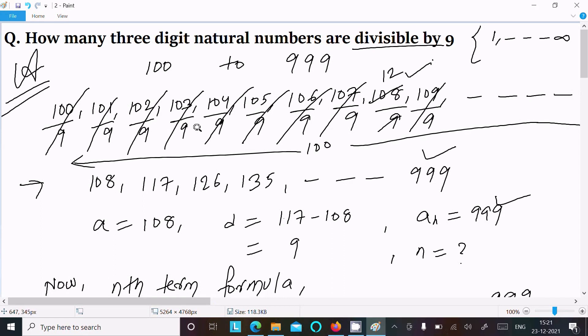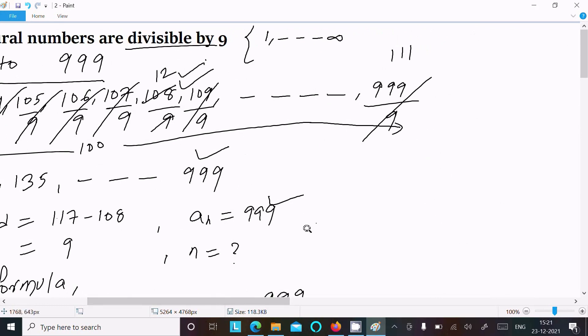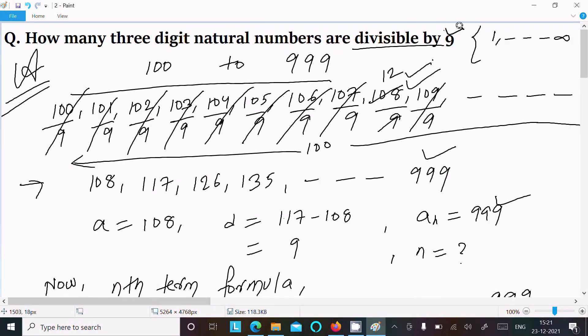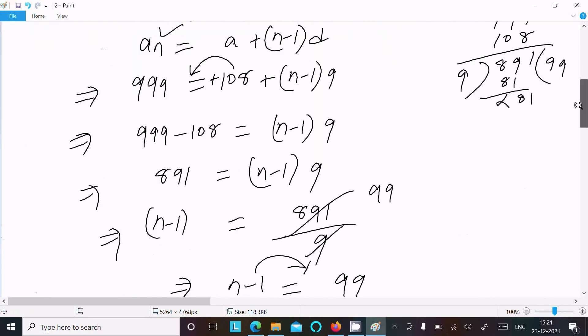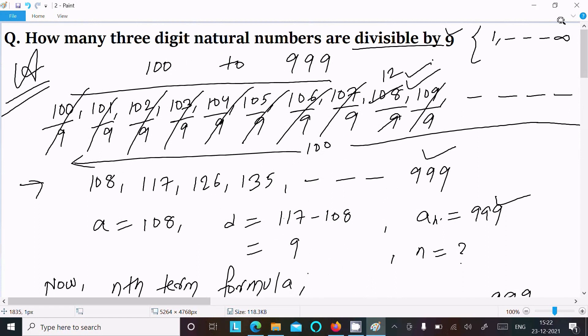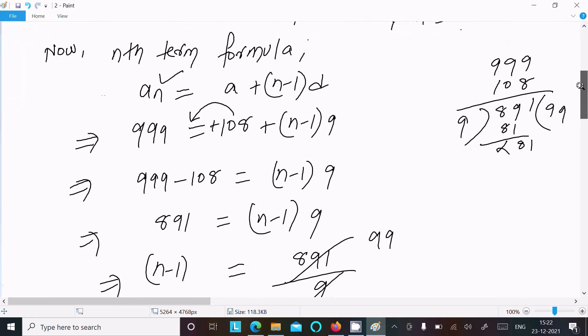To recap: 3-digit natural numbers start from 100 and continue to 999. Testing divisibility by 9, the first divisible number is 108. The last is 999. Using first term 108, common difference 9, and last term 999, we apply the nth term formula and solve to get n equals 100. This is how we find that 100 three-digit natural numbers are divisible by 9. Thanks for watching, see you next time.